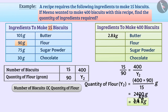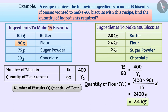Now you can pause the video and find the amount of sugar and chocolate required. You will get 2 kilograms of sugar powder and 0.8 kilograms of chocolate for making 400 biscuits. In this way, the ingredients required to make 400 biscuits are as shown below.